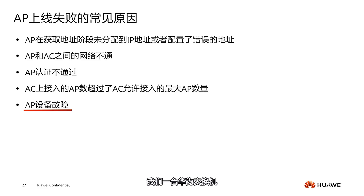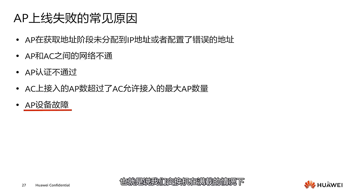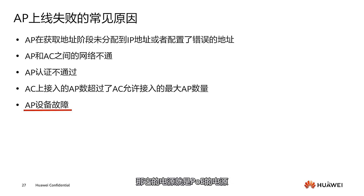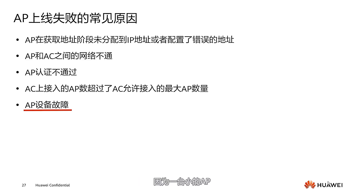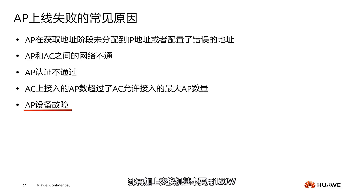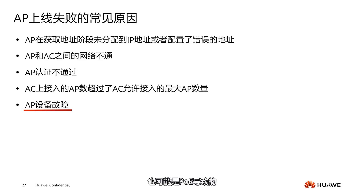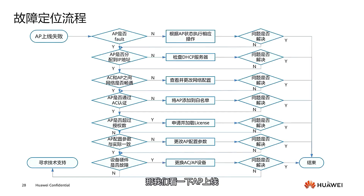By default, a Huawei switch reserves about 120 watts for its power module. If using PoE, you need to calculate the required battery capacity based on the number of AP devices. A small AP might need about 15 watts, so running 10 APs would require 150 watts plus the switch's 120 watts — approximately 270 watts total. Therefore, you would need at least a 300-watt, or perhaps a 500-watt power supply. AP faults can also be caused by PoE power issues.